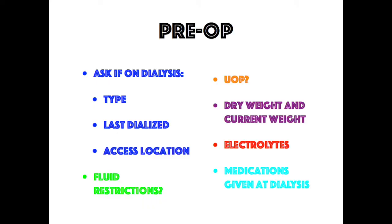You want to ask if they're on dialysis, what type, when they were last dialyzed, and where their access location is. Ask about fluid restrictions and urine output, their dry weight and current weight. If they're hypovolemic, remember that a patient can have life-threatening hypotension with the vasodilatory and cardiac depressant effects of anesthetics. Know their electrolytes, especially potassium, and any medications given during dialysis that may not be on their medication list.